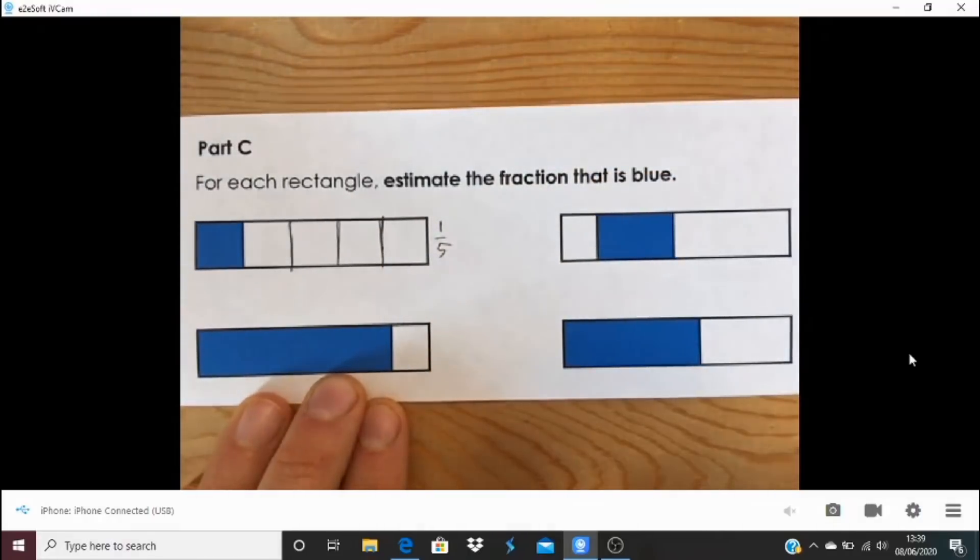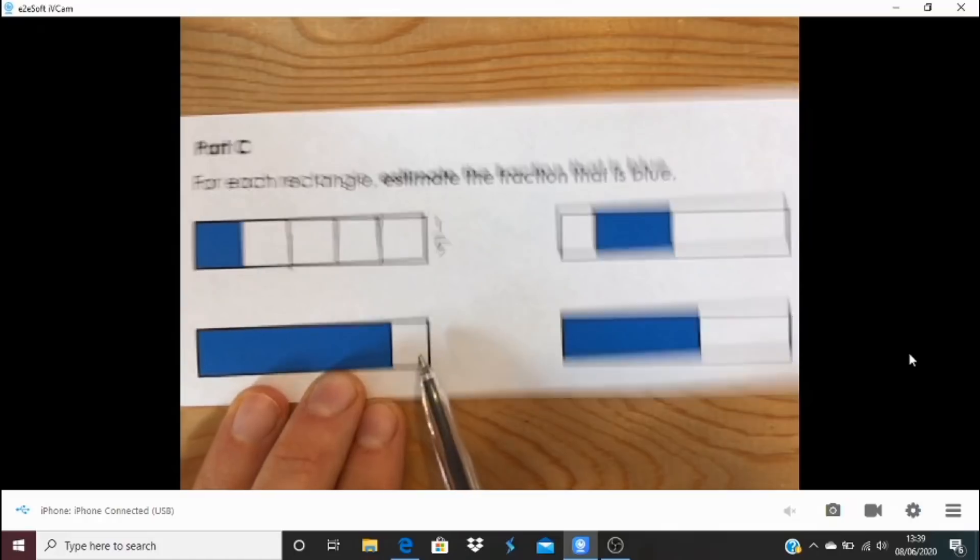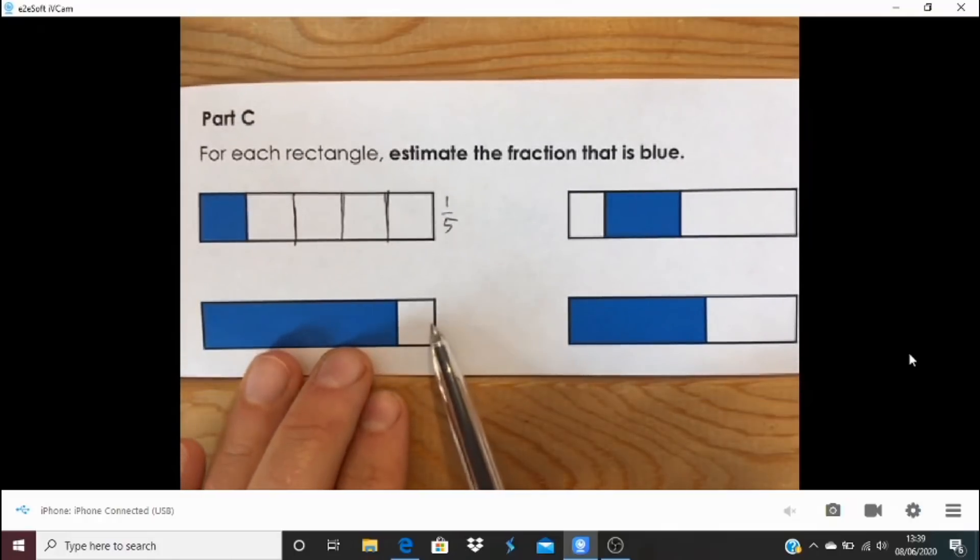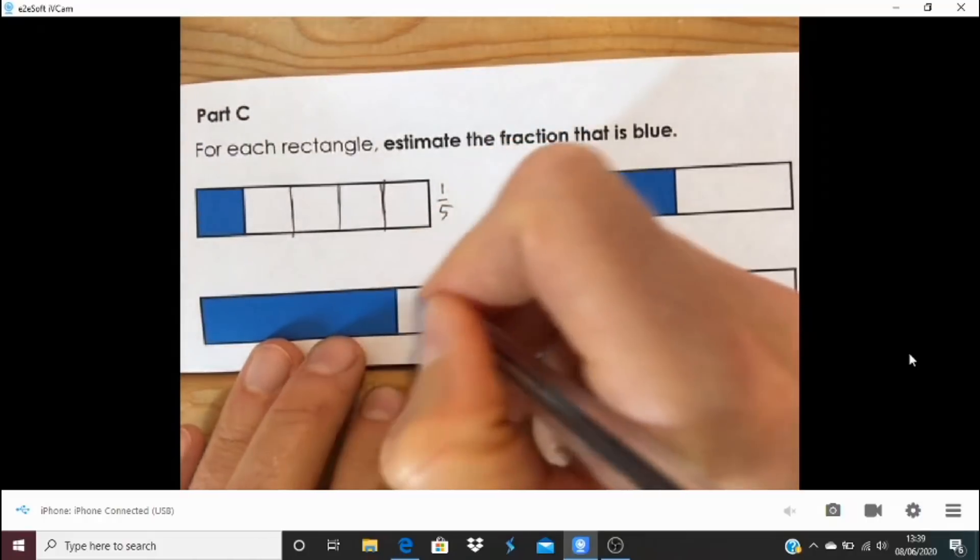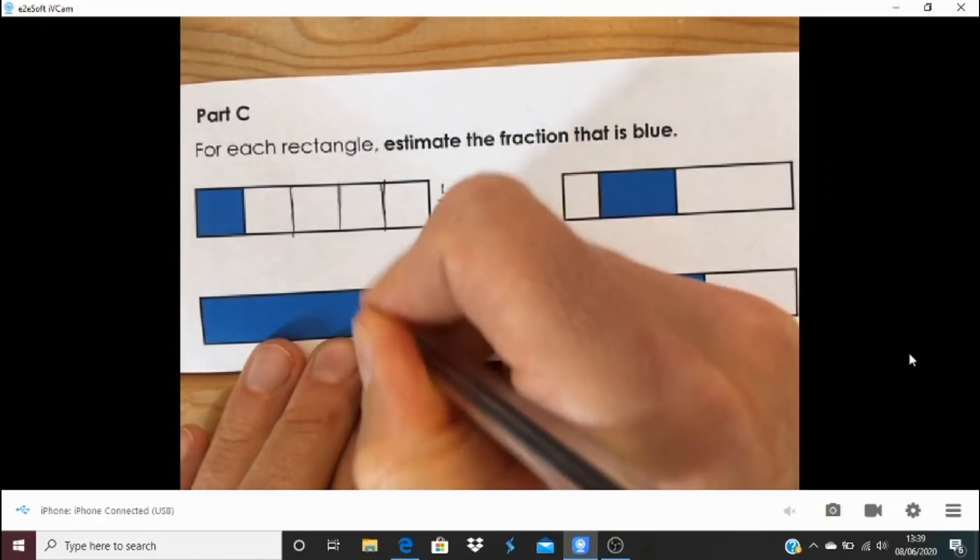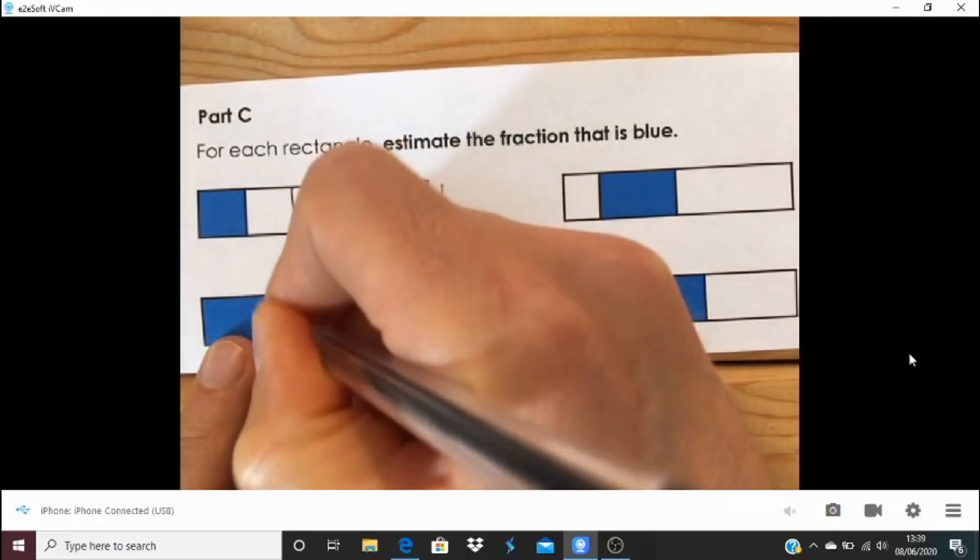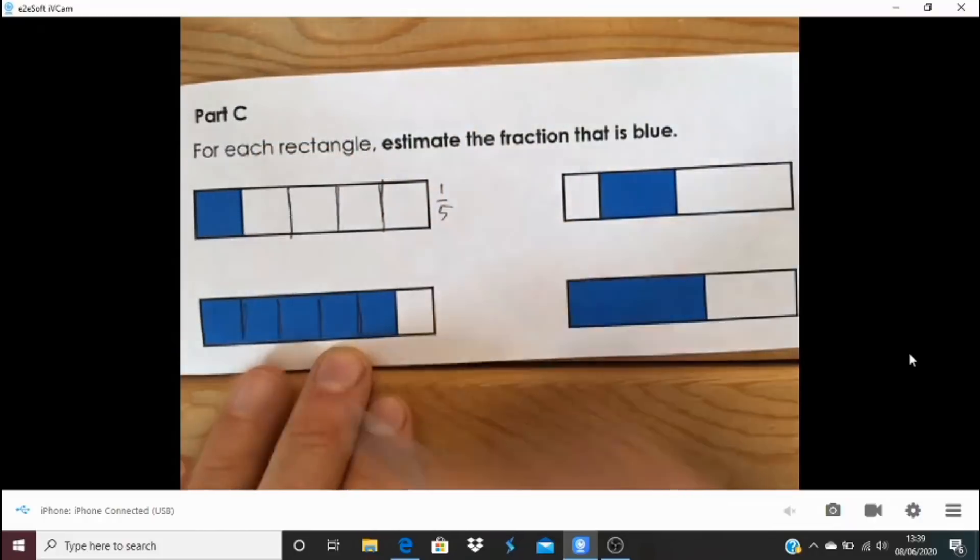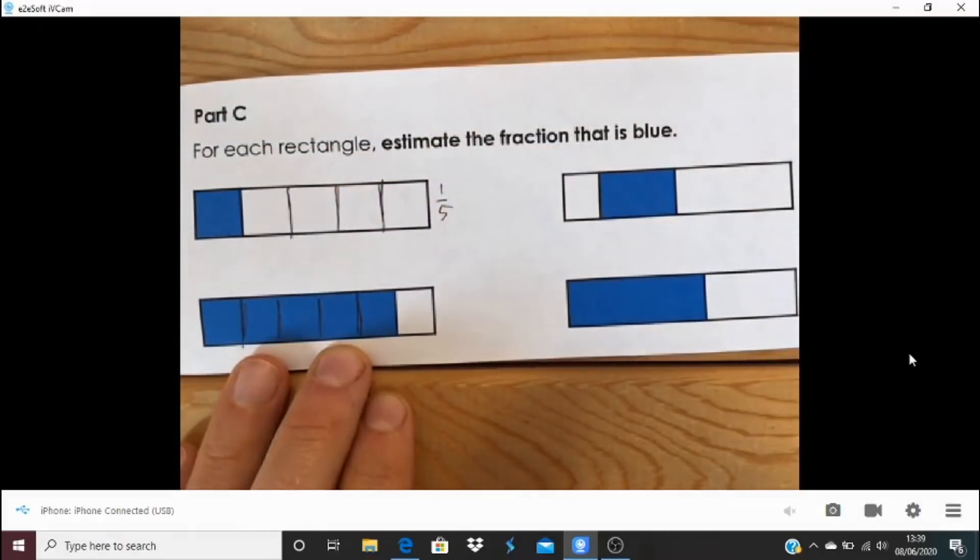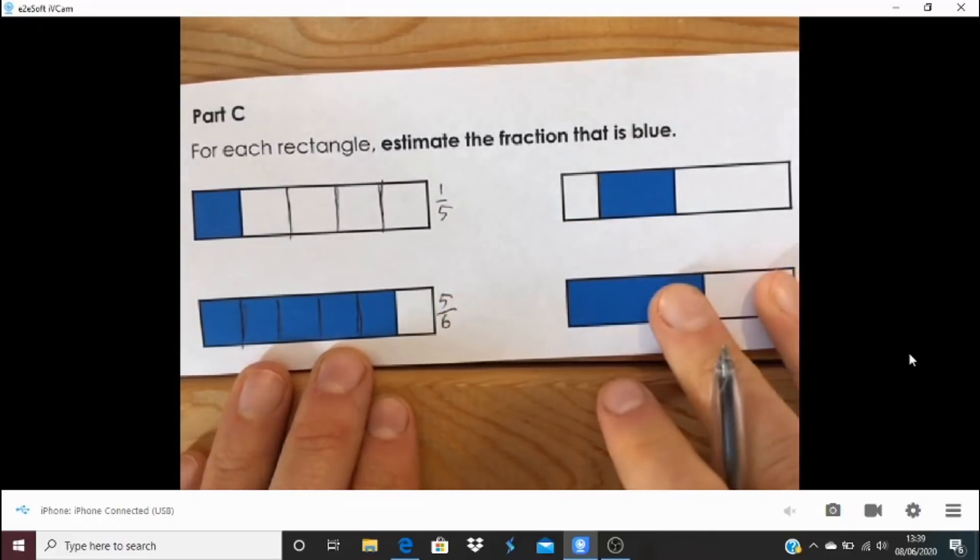They look about equal sizes. How many parts? There's five parts, so it's a fifth. One observation I would make here is that this part, this fifth, is slightly larger than this part here. My guess is that this one will be about a sixth. Let's have a look. I'm going to try and make them roughly about equal to me. Of course, if I want to be more accurate, I would measure them with a ruler. How many parts do we have there? We have six parts. So five sixths, because five of those six parts are blue.